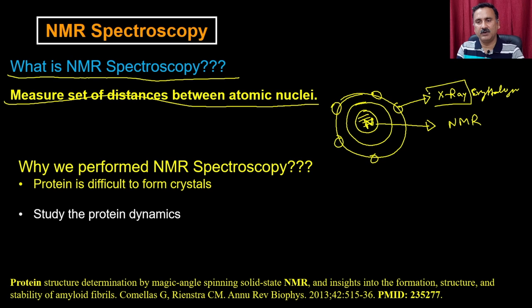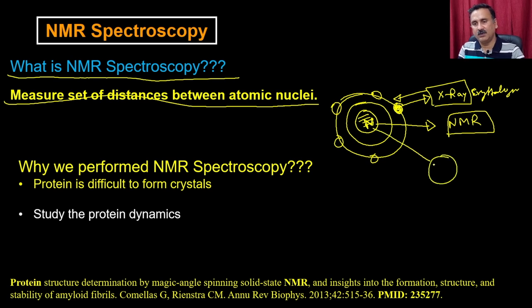So you are actually going to measure the distances between the two nuclei — for example, you can have the hydrogen nuclei, you can have the nitrogen nuclei and so on. So if you are mapping with the X-ray crystallography, you will be able to see the arrangement of the electrons. That is how you are generating the electron density map. Whereas in the case of NMR, you are actually going to see the differences or distances between the nuclei.